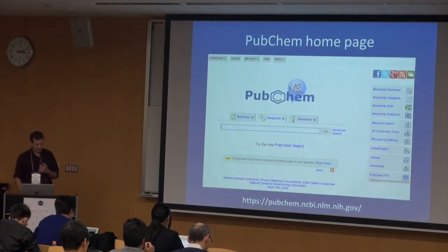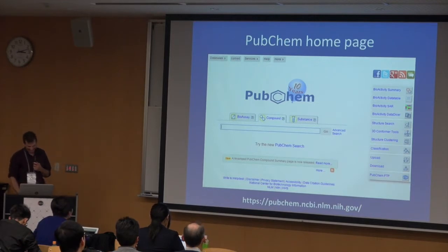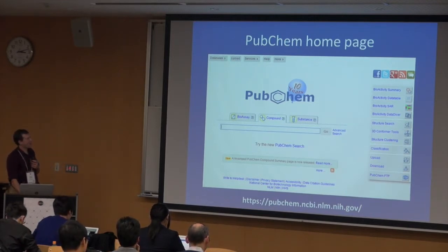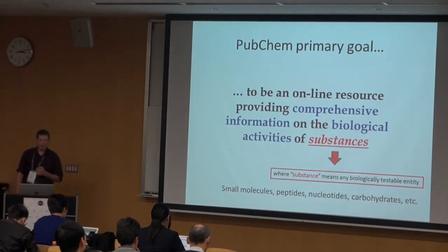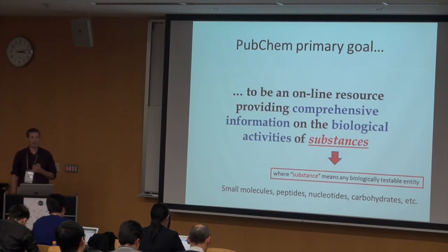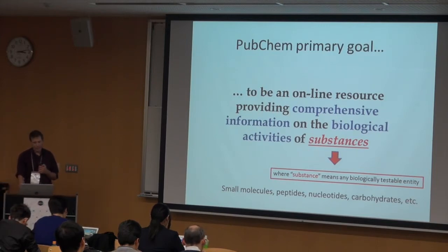This is our home page, and we have now been around for 10 years. Our primary goal is to be an online resource that provides comprehensive information on the biological activities of chemical substances — not just small molecules, but also peptides, nucleotides, carbohydrates, diesel fuel, hydrolyzed chicken feathers, plant extract 45 — basically anything that you have as a sample and can test in a biological experiment.